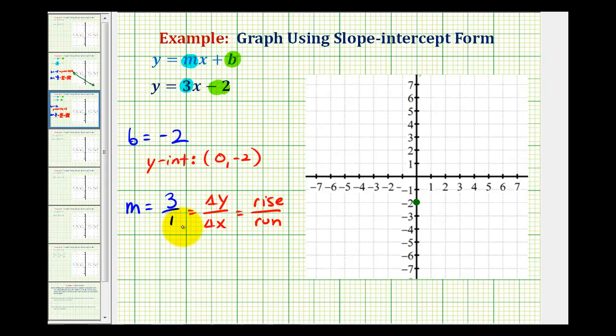And since the slope is 3 over 1, from the y-intercept, we'll go up 3 units and right 1 unit. And of course we can do this again, up 3, right 1. And again, the reason we're going up 3 is because the numerator is positive 3, which is the change in y, and the reason we're moving right 1 is because the denominator is 1, which represents the change in x.